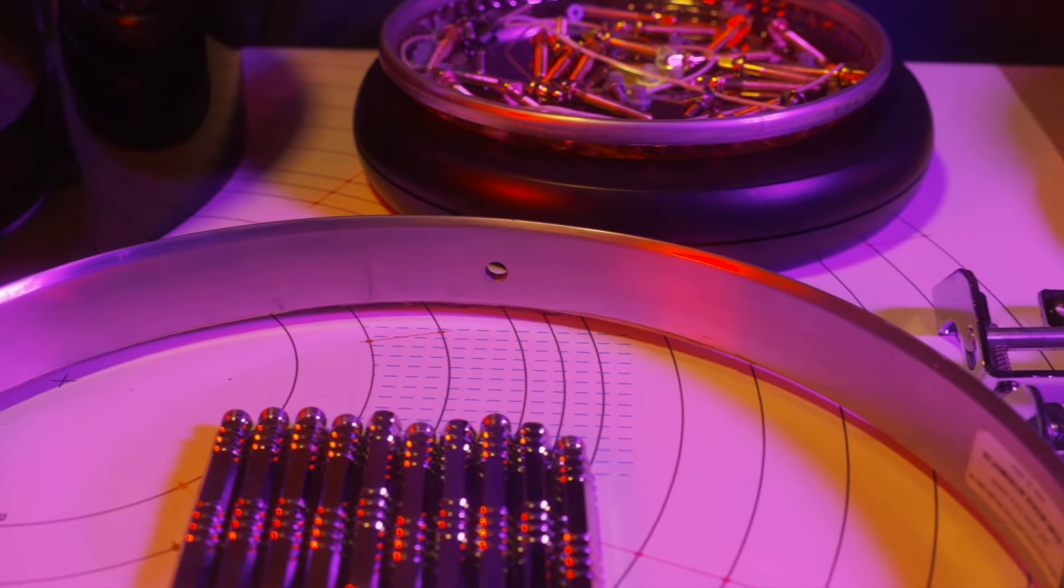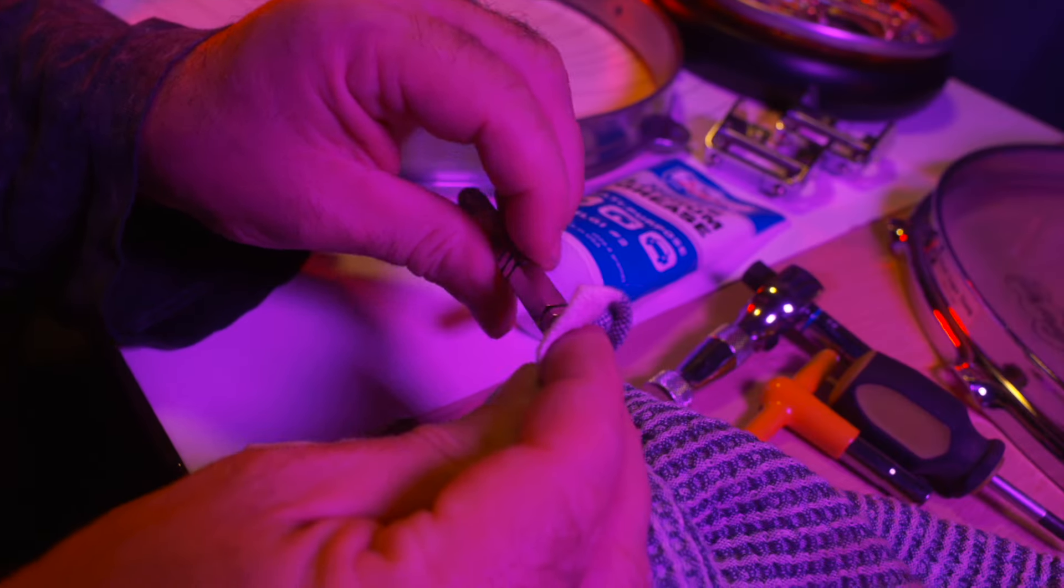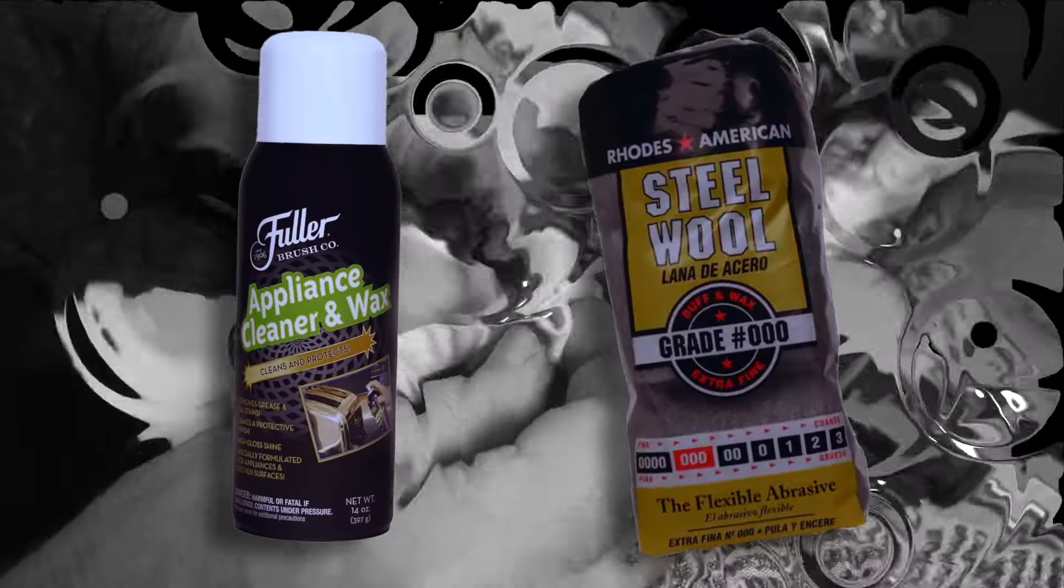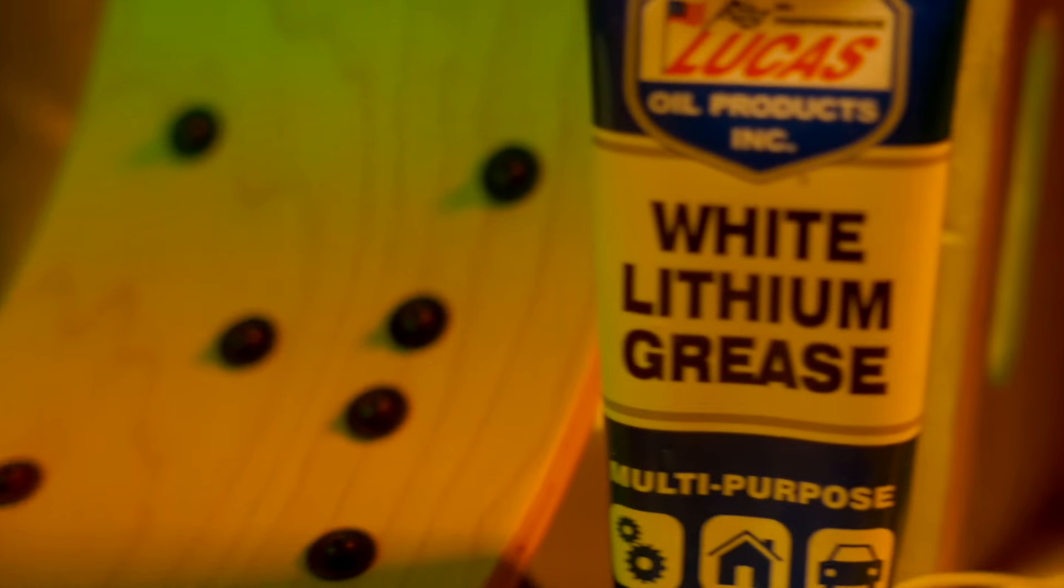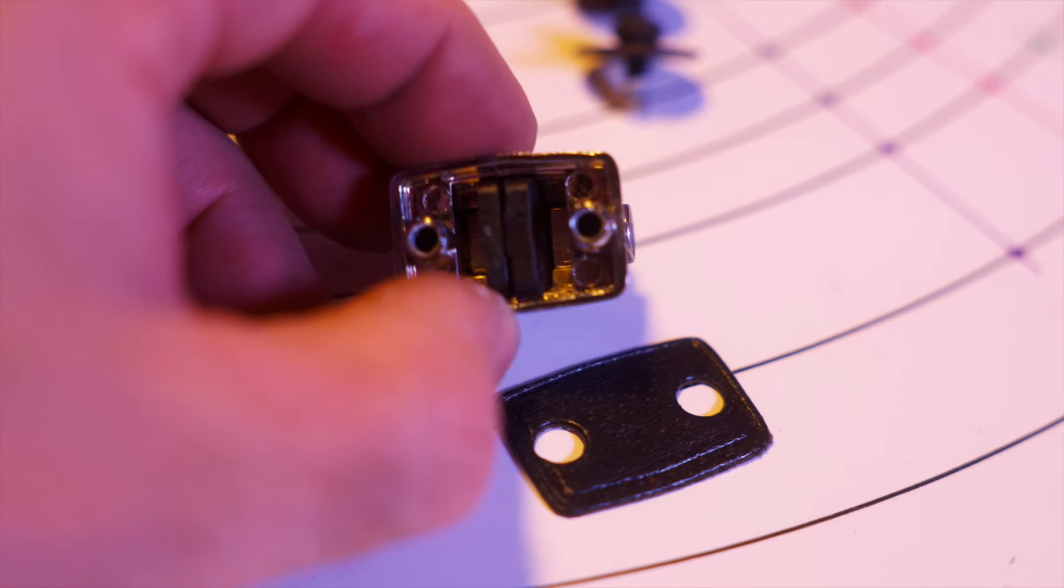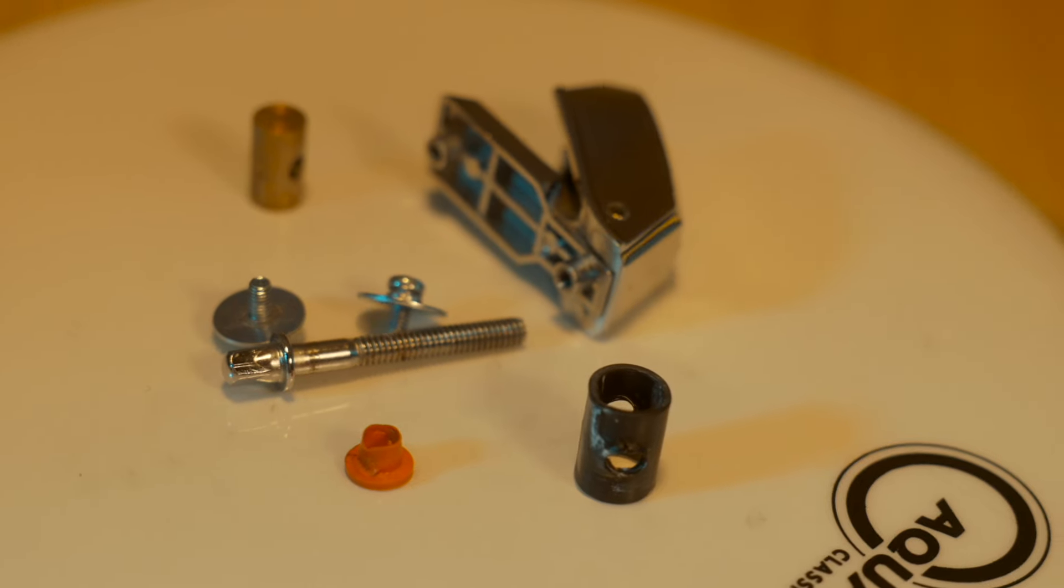Once you get the drum apart, I start by cleaning all the chrome. I use Fuller's kitchen wax and triple zero stainless steel wool pads. As I mentioned in earlier videos, I use white lithium grease on all my parts. It's heavy, it's clean, and despite the fact that it's grease, it doesn't loosen once it's tightened.